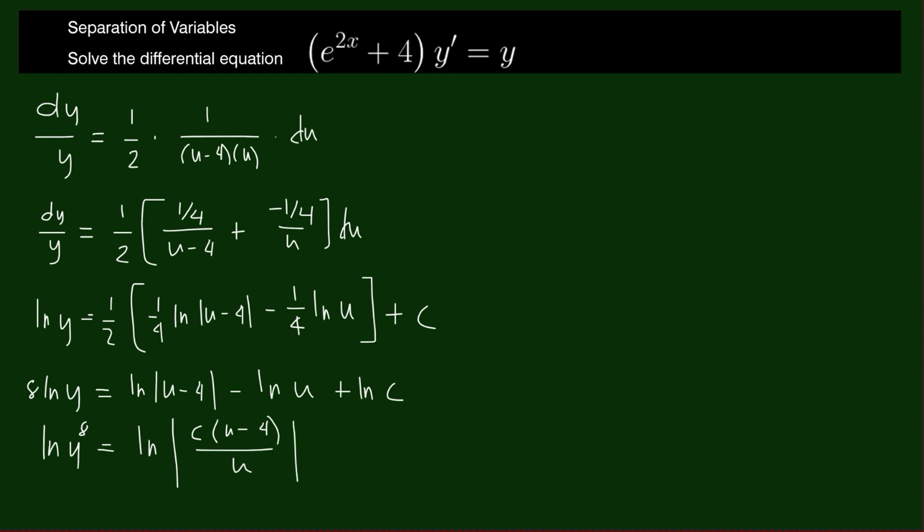By law of logarithm, this is ln of c times u minus 4 over u. Get the exponential of both sides. We have y to the 8 equals c times u minus 4 over u.